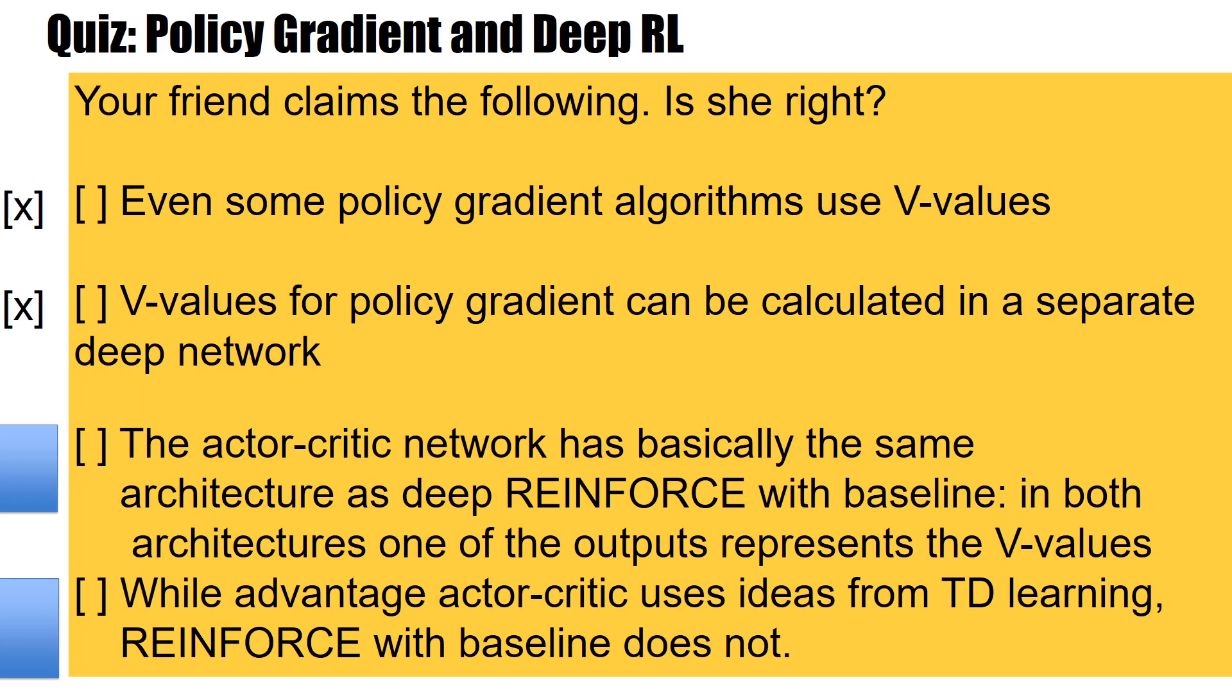Third claim: the actor-critic network has basically the same architecture as deep reinforce with baseline. In both architectures, one of the outputs represents the V-values. Well, this is correct.